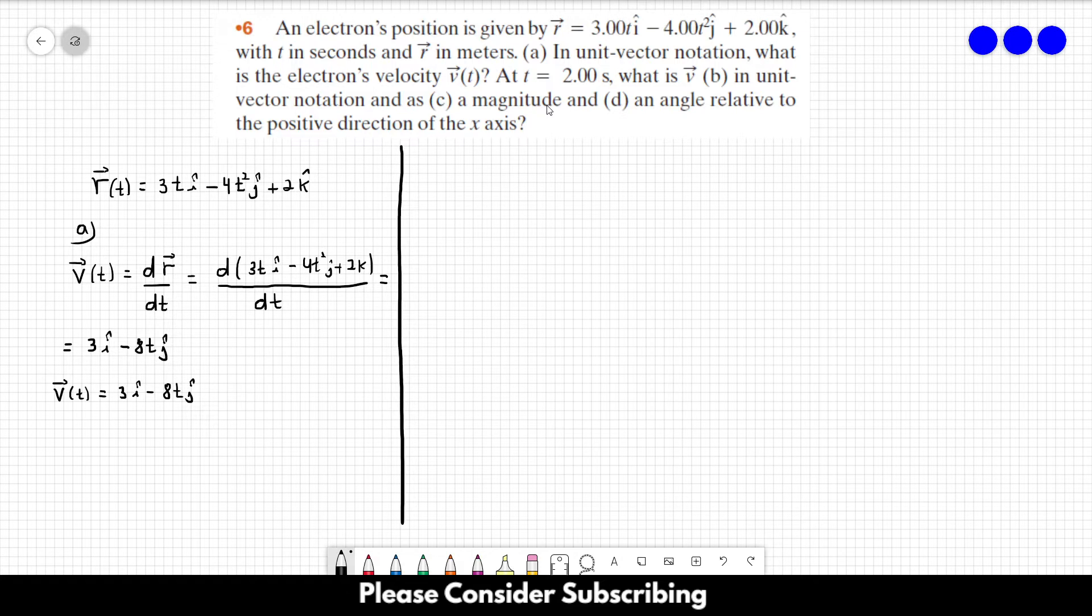Letter b: at t equals 2 seconds, what is vector v in unit vector notation and as a magnitude and an angle? For letter b, c, d, we know that t equals 2 seconds. So let's first make the calculation for t equals 2 seconds. You just have to replace t for 2.